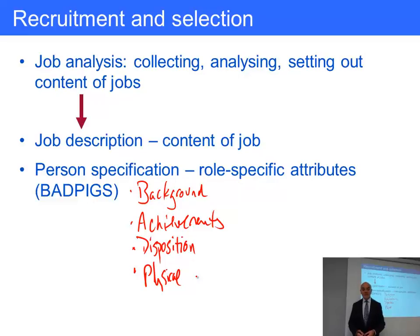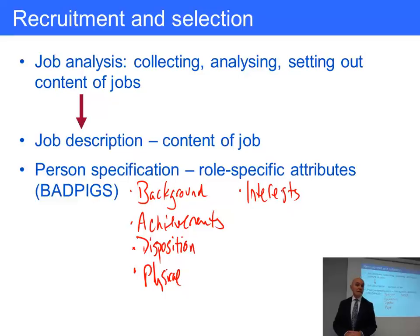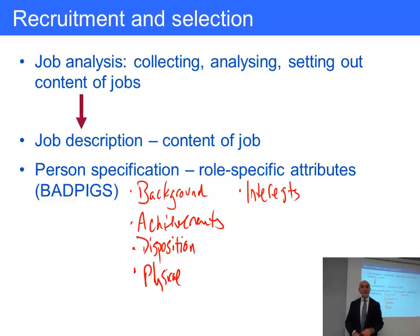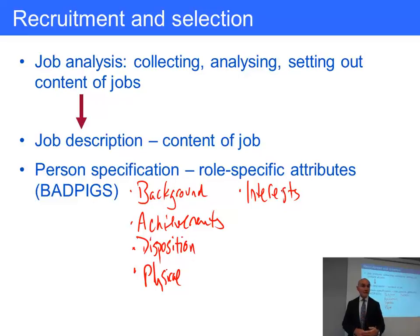I is for interests — essentially the candidate's hobbies. This can be useful in interviews as it breaks the ice and gives insights into personality. If someone says they are captain of the local soccer club, you know they're fairly sociable and there's evidence of leadership skills. If someone has solitary interests like stamp collecting or birdwatching, a highly sociable role might not come naturally — but they might be very good at keeping detailed notes and records.